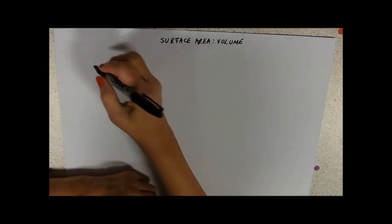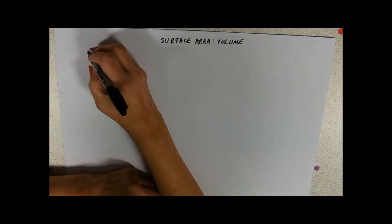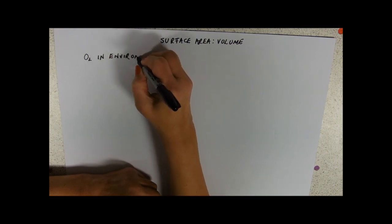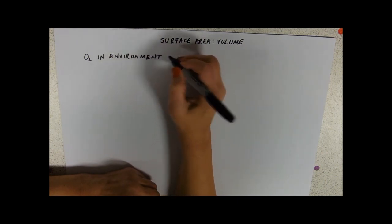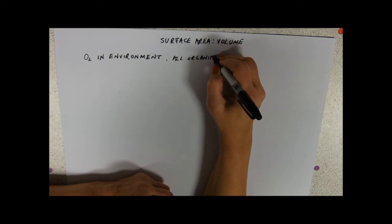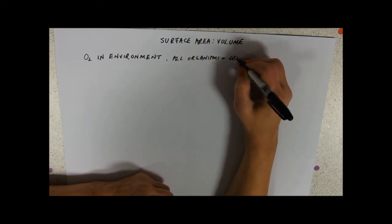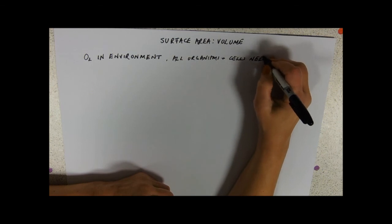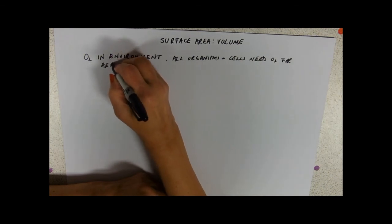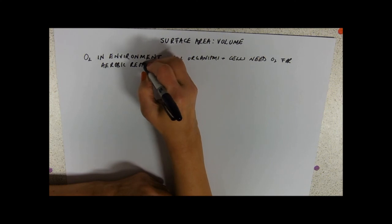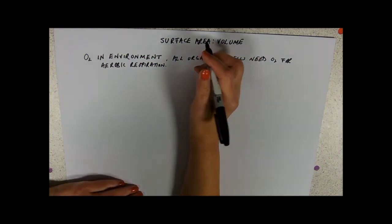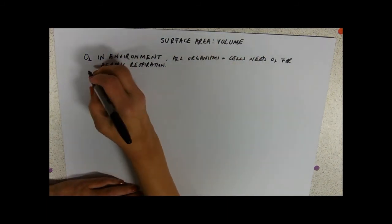Our key idea here is that the place where the oxygen is, is the environment. All organisms and cells need oxygen for respiration, particularly aerobic respiration.